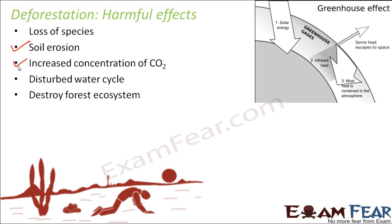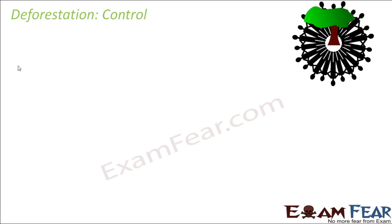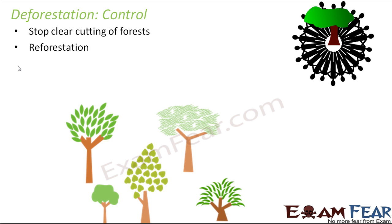How can we control deforestation? It is we who can control it completely. We should stop the clearing and cutting of forests. We have to control our needs and our greed, and if necessary, control the rate of population growth so we can decrease our demands and not disturb the forests as much.